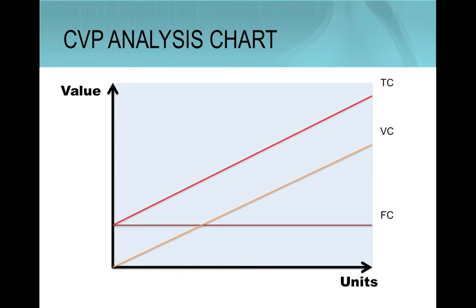A new line that represents the total costs should include the sum of fixed costs with variable costs. Thus, the total costs should be represented by a line parallel to the variable costs starting at the origin with the value of fixed costs.